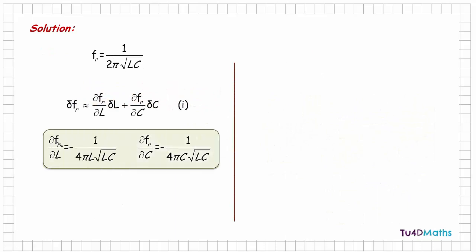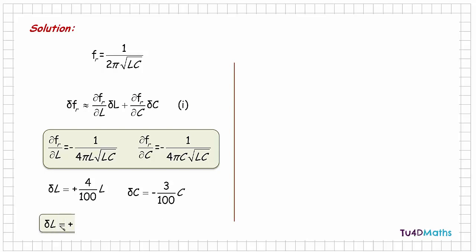We now know the partial derivatives ∂f/∂L and ∂f/∂C, so we need to work out the small changes in L and C. From the question, the inductance increases by 4%, which is 4/100 × L, and the capacitance decreases by 3%, which is −3/100 × C. So δL = 0.04L and δC = −0.03C.